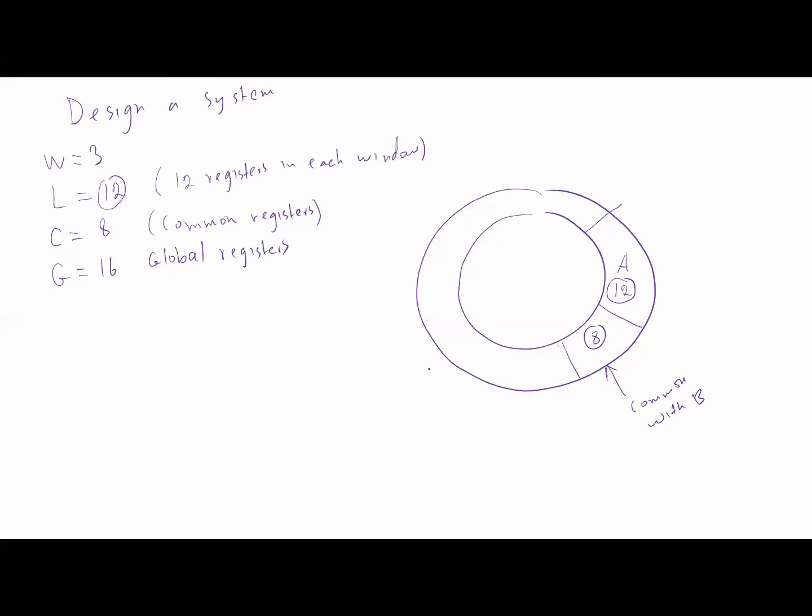And for the B procedure we need 12 registers and 8 common to C. And for the C procedure we need 12 and 8 common to A. In addition to that we need 16 global registers.